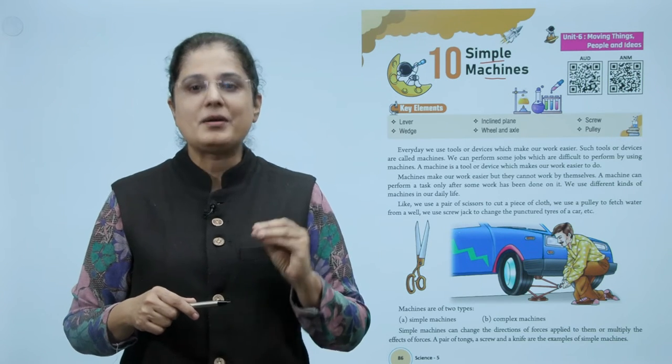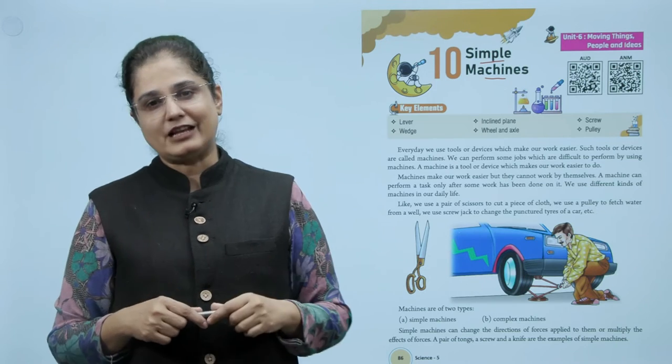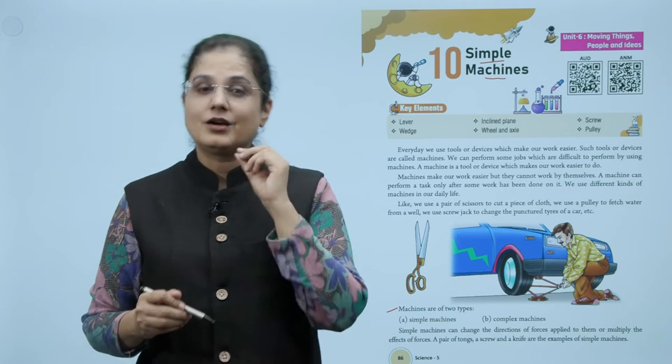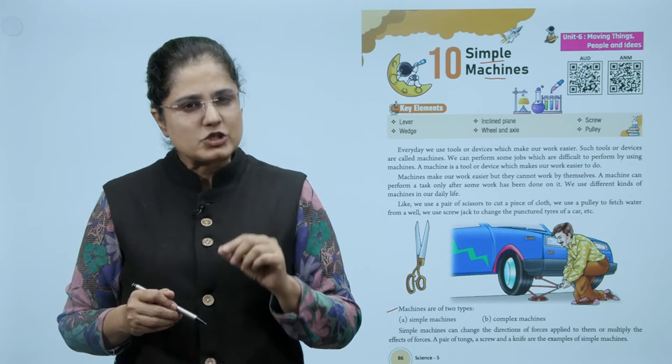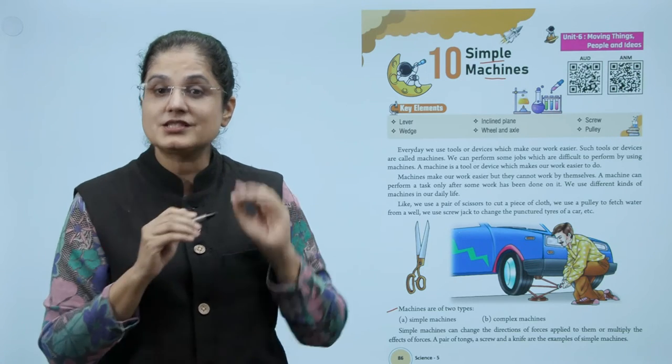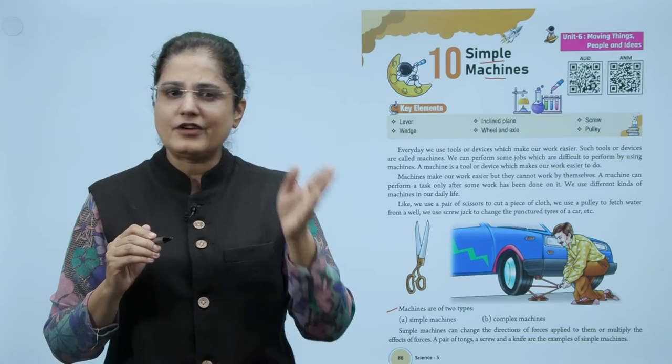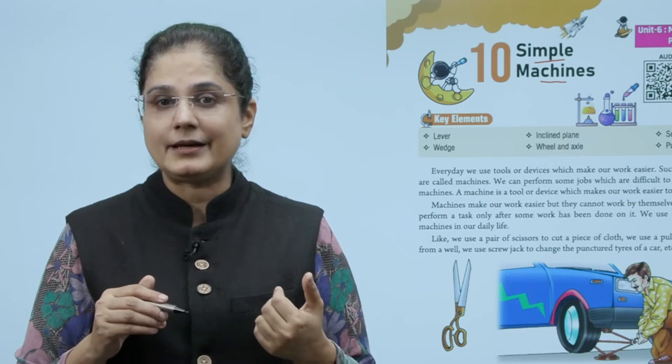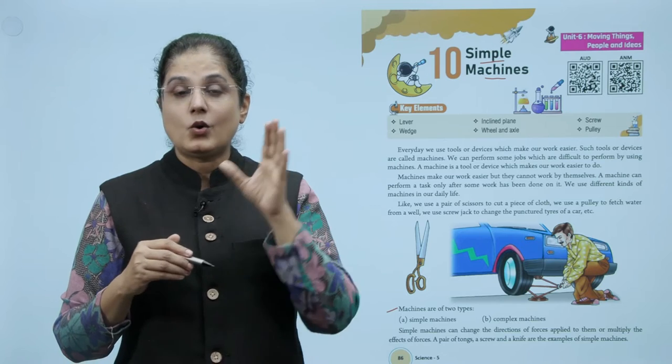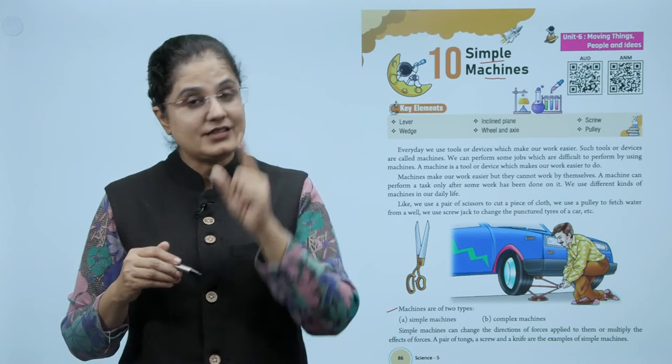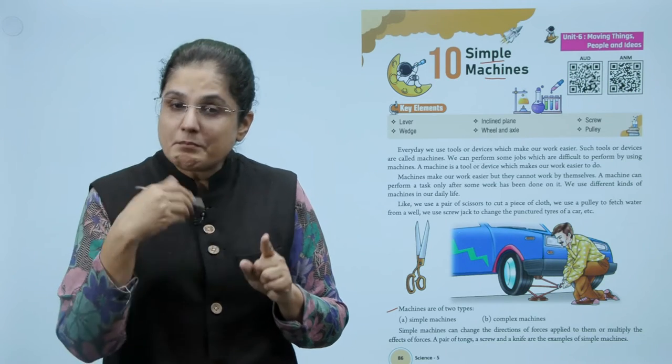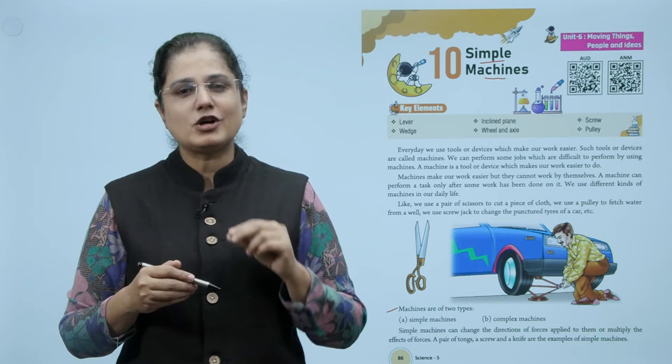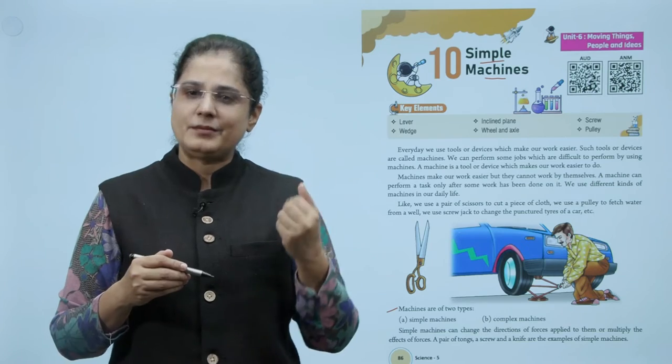So machines make our work easy but cannot work by themselves. Now there are two types of machines: simple machines and complex machines. Simple machines can change the direction of forces applied to them or multiply the effects of forces. Examples of simple machines are a pair of tongs, a screw, and a knife.